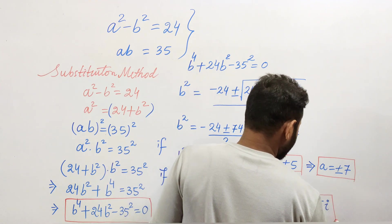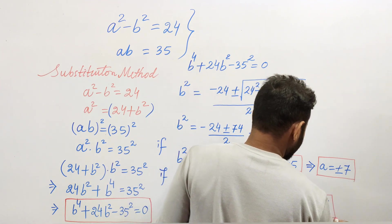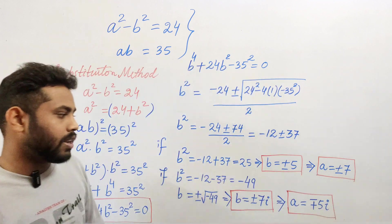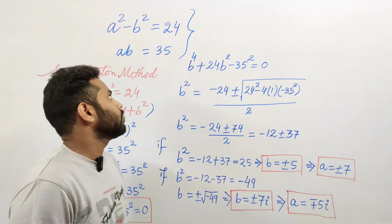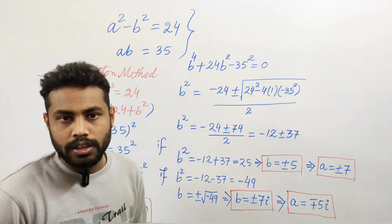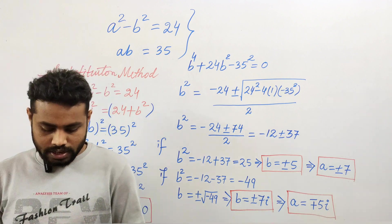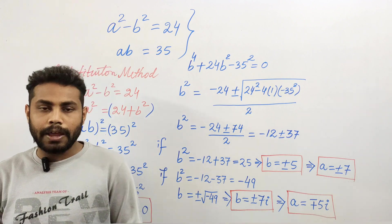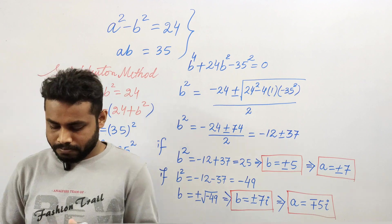So now we got two pairs of solutions. One is a real and integer solution. Another pair is complex, not real. That's it for today. We will see you next time with a new question. Till then, thank you for watching and bye-bye.